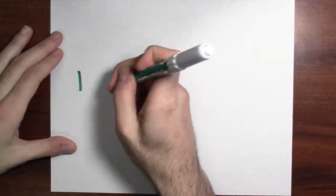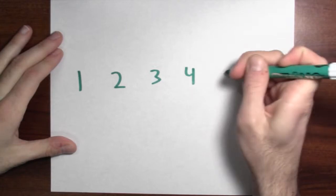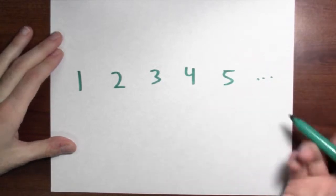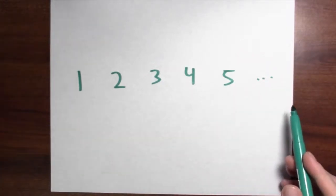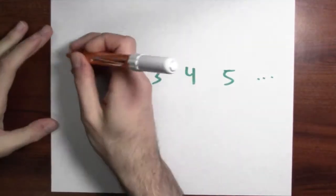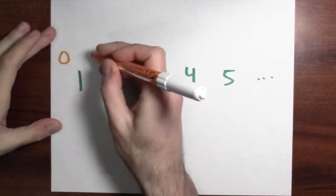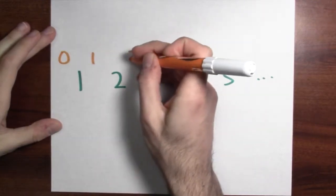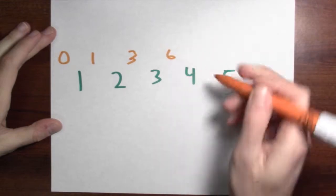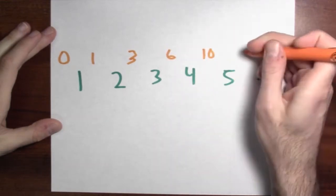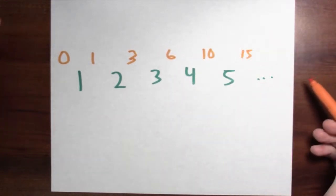Let's suppose that I've got a list of numbers — something easy, like 1, 2, 3, 4, 5. The accumulation function just amounts to adding up those numbers. So in this case, it'd be 0 plus 1, 1 plus 2, 3 plus 3, 6 plus 4, 10 plus 5, and so forth.